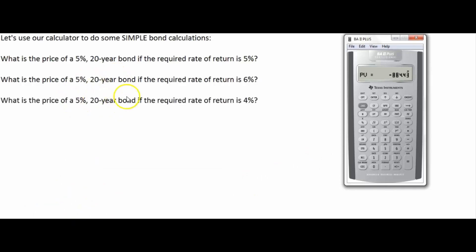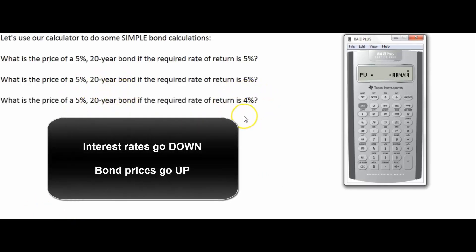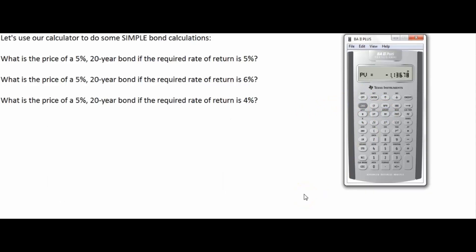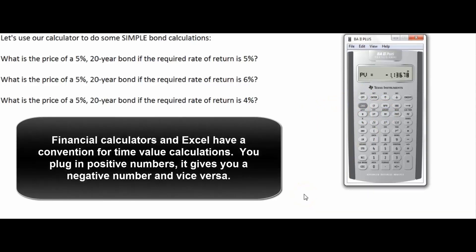What is the price of the five percent twenty-year bond if the required rate of return is four percent? Interest rates go down, so bond prices go up. Since the only thing changing is the interest rate, we plug in two (four percent divided by two) and compute the present value. The price of the bond has gone up to $1,136.78. Don't be concerned about the negative sign — the calculator convention is that positive inputs yield negative outputs and vice versa.